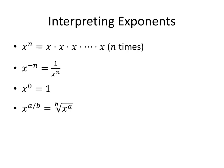Now, if the exponent happens to be negative, the way that we interpret that is as 1 over x to the n. So, for example, 2 to the minus 3 just means 1 over 2 to the 3, which would be 1 eighth.